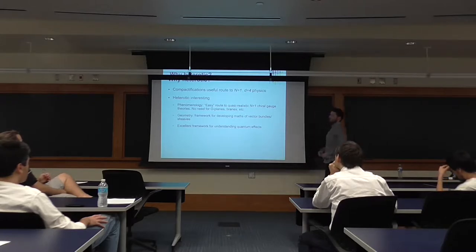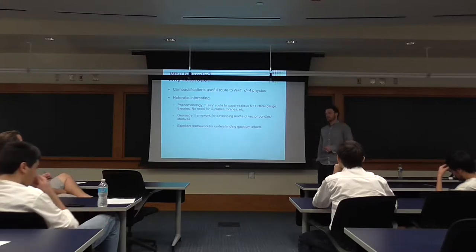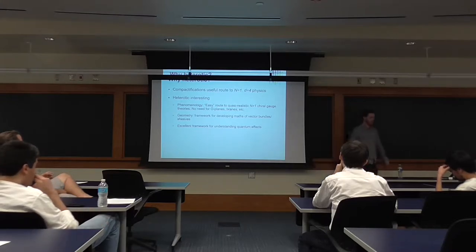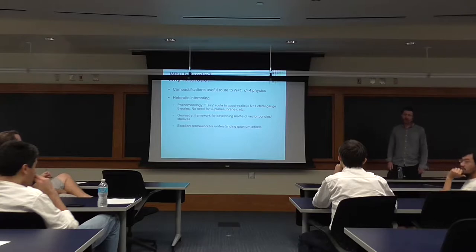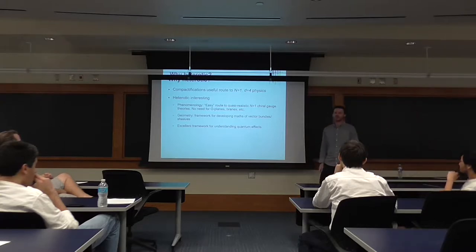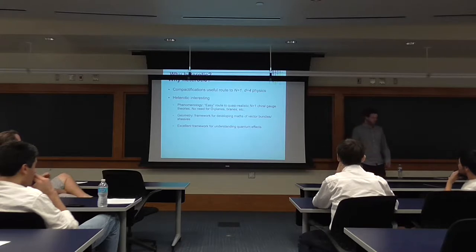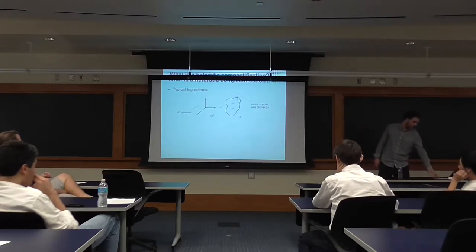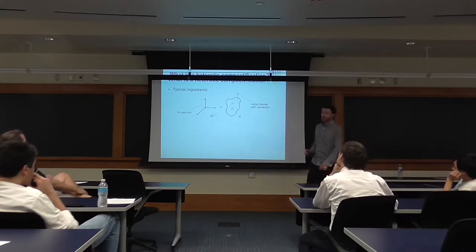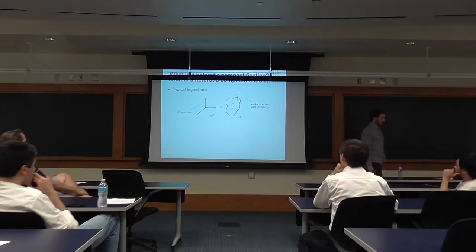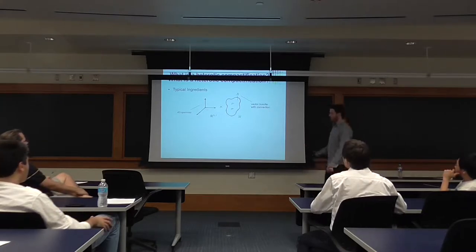So why would you want to study the heterotic string? For me the most interesting thing is it's a really controlled way to understand quantum corrections in string theory. You can write down compactifications, you have a worldsheet description, and you might be able to understand alpha prime corrections in that situation, without needing to appeal to non-perturbative objects like orientifold planes or D-branes. It also has a very nice interaction with geometry. Here is a little cartoon about pictures. This asks: what is a heterotic compactification?